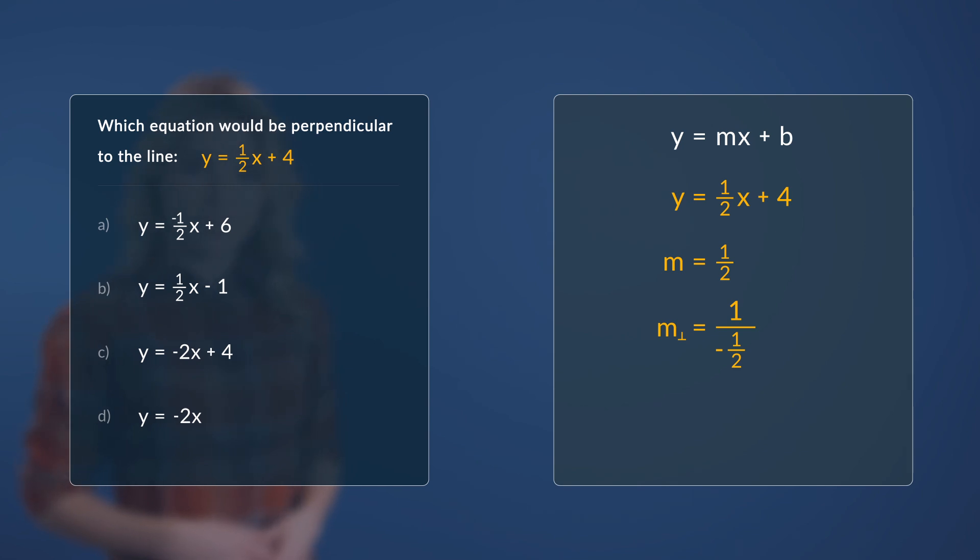Well, what is 1 divided by negative half anyways? Well, if we simplify it, it's negative 2. Therefore, our perpendicular equation of this line is y equals negative 2x plus 4, which makes c the correct answer here.